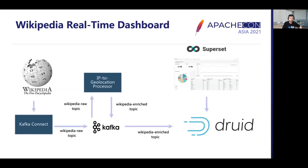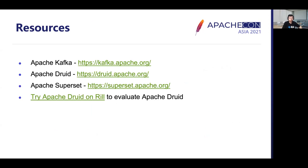To summarize the Wikipedia real-time dashboard example: the raw Wikipedia stream is captured using Kafka Connect and added to a Wikipedia raw topic. The Wikipedia raw topic is then consumed by a Kafka Streams processor and enriched by adding geolocation information to each event. The enriched events are saved to a Wikipedia enriched topic. Apache Druid's native Kafka indexing capabilities are then used to stream the enriched topic directly into Apache Druid. Finally, Apache Superset is used on top of Apache Druid to create our final dashboard. Resources for Apache Kafka, Apache Druid, and Apache Superset are provided, and you can also evaluate and see the Wikipedia data ingested in real time on Rill's public dashboard.